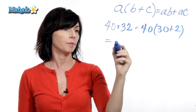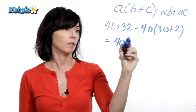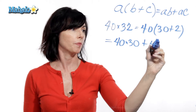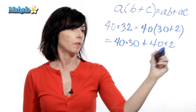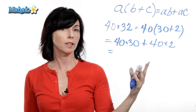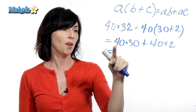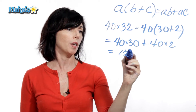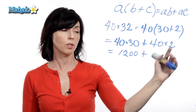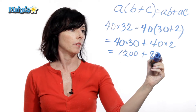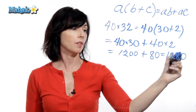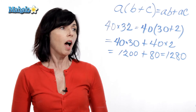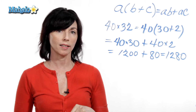40 times 30 plus 40 times 2. 40 times 30 is 1200 — here's how I know: 4 times 3 is 12, and I just add these two zeros. So 40 times 30 is 1200, plus 40 times 2 is 80, so I get 1280. So instead of lining them up and doing multiplication the regular way, I can use the distributive property to calculate this.